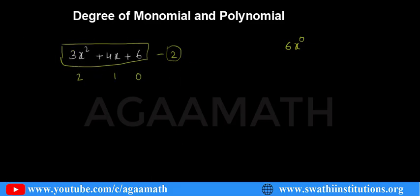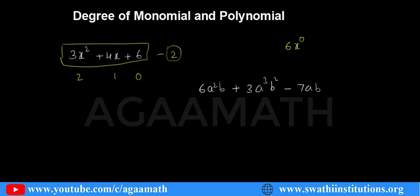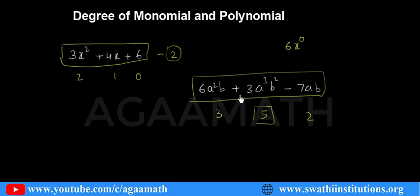Let me take one more example: 6a²b + 3a³b² − 7ab. This polynomial has 3 terms. The degree of 6a²b is 2+1 = 3. The degree of 3a³b² is 3+2 = 5. The degree of 7ab is 2. The greatest value is 5, so the degree of this polynomial is 5.